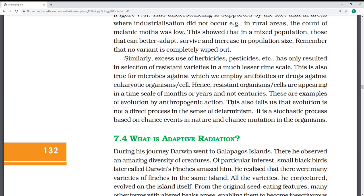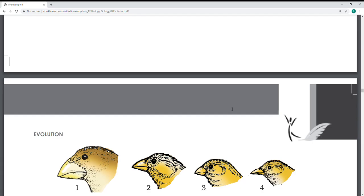Other examples like Australia. What is the next point - adaptive radiation? Adaptive radiation is the evolution of different species in a given geographical area starting from origin, radiating to different geographical habitats. Variety of beaks - they have given here variety of beaks of the finches Darwin found in Galapagos Island. During his journey, Darwin went to Galapagos Island where he observed amazing diversity of creatures. He observed small blackbirds with many varieties.